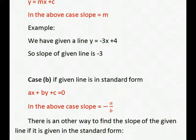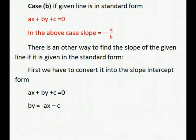There is another way to find the slope of the line if it is given in the standard form. First we have to convert it into slope intercept form. Ax plus By plus c equals 0. Now keep y at left side and rest at the right side.